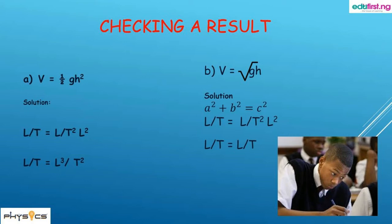Simplifying the right-hand side, we get L multiplied by L² divided by T², which gives us L³/T². Comparing the left-hand side (L/T) with the right-hand side (L³/T²), the terms do not match, so this equation is not dimensionally correct.